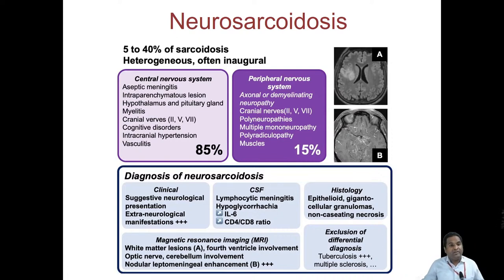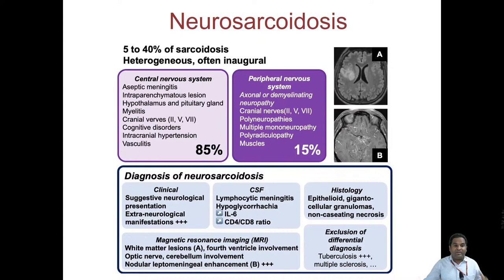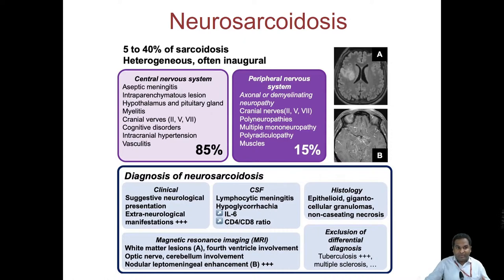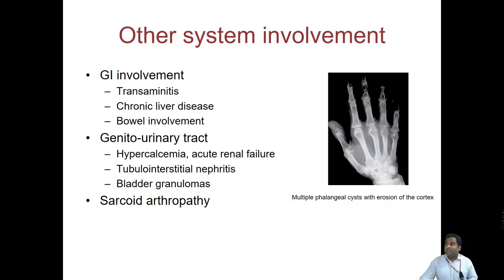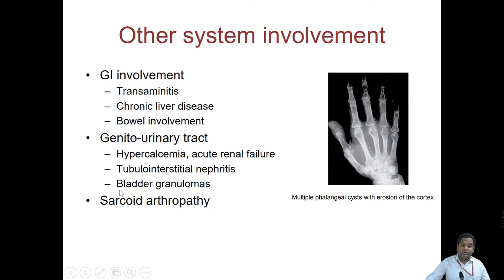Neurosarcoidosis occurs in 5 to 40% of patients and can involve the CNS as well as the peripheral nervous system; CNS involvement is much more common than peripheral. We see a lot of neurosarcoidosis these days because it presents with usual manifestations: cranial nerve palsies, myelitis, and peripheral neuropathy. Unless you think of sarcoidosis, you will miss it. We perform a lot of lung biopsies from normal-appearing lungs in patients with suspected neurosarcoid and find granulomas in normal lung appearance as well.